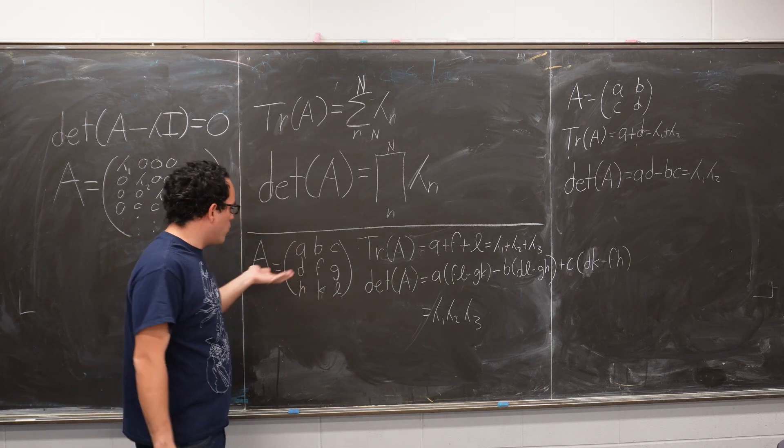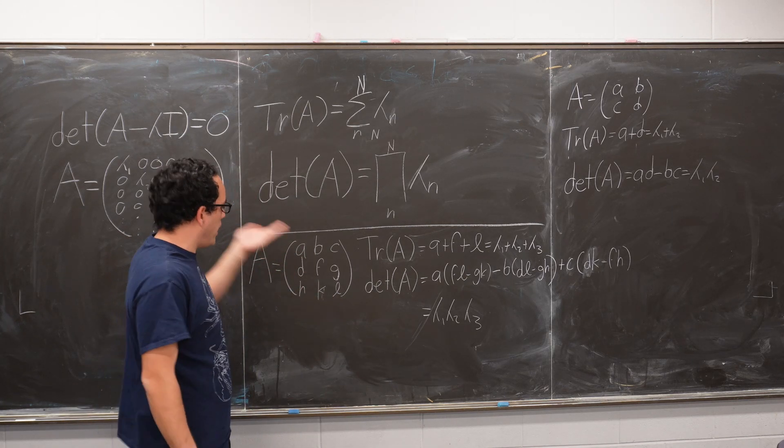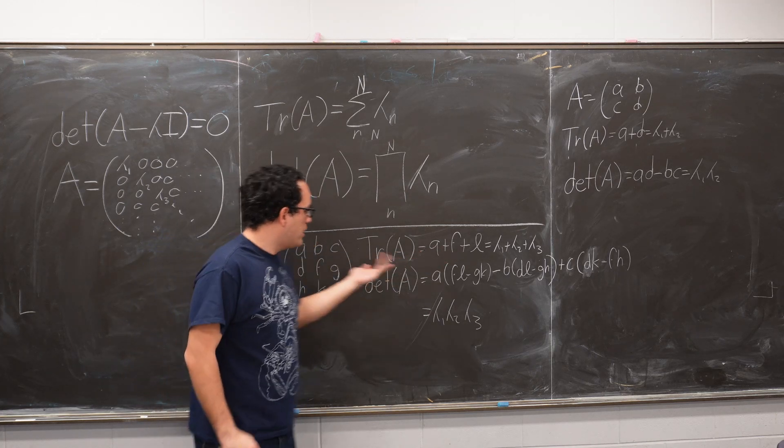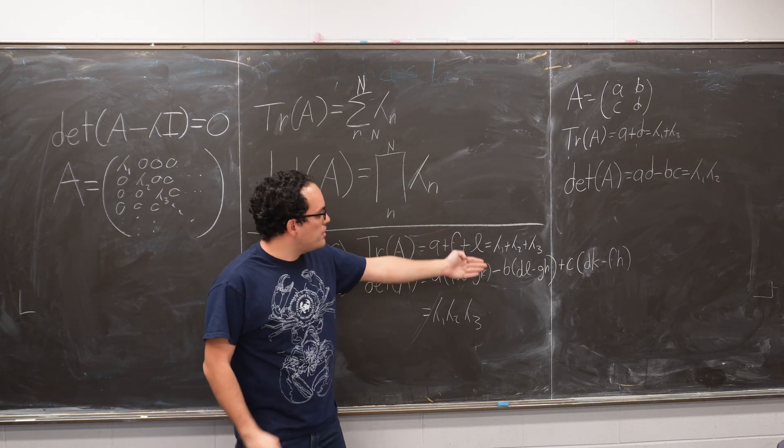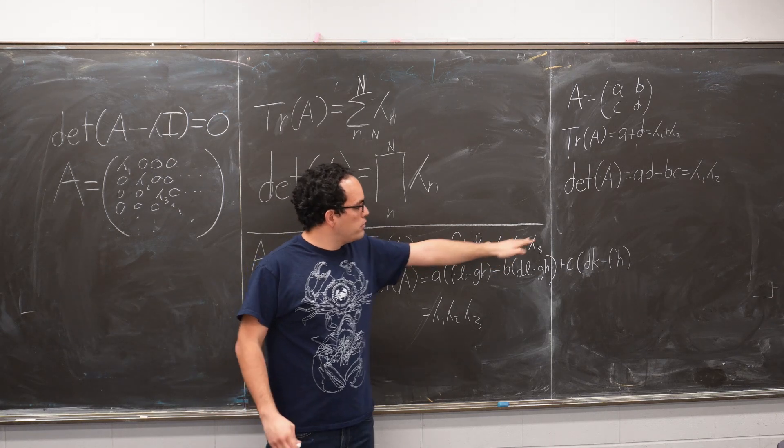So if you have a 3x3 matrix, then the trace is equal to, again, the sum of all the things in the diagonal, a plus f plus l, which is equal to λ1 plus λ2 plus λ3.